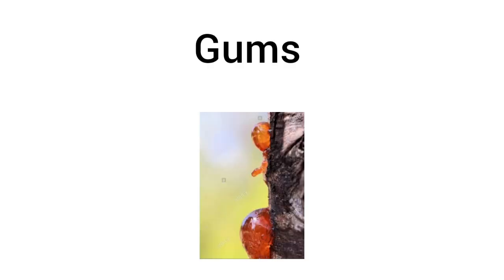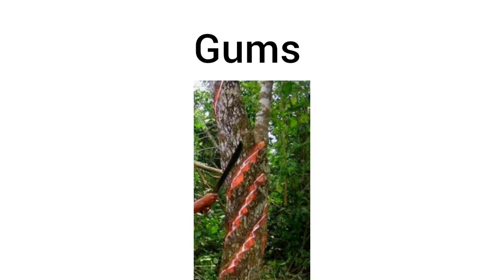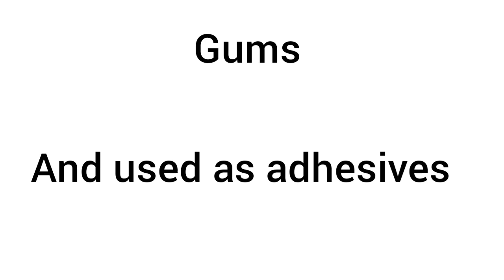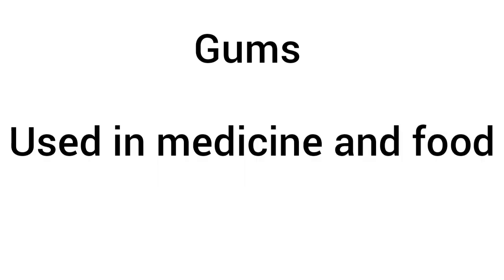In some plants, when a branch is cut, a sticky substance oozes out called gum. This gum swells by absorbing water and helps in healing the damaged part of the plant. These gums are of much economic importance for human beings — they are used as adhesives or binding agents, sticking agents, and they are also used in medicines and in food.